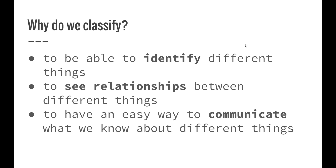As we move on, we'll be looking particularly at the binomial naming structure, where all organisms have a two-named Latin version of their name, which is the same around the world. That way, we're able to identify what particular plant, animal, or other type of species we're looking at, regardless of the language that each different country speaks.